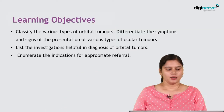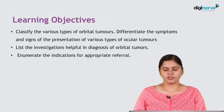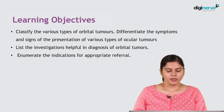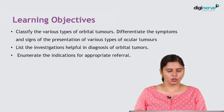Welcome students to this session. This is the continuation of ORBIT 1 lecture to ORBIT 2. Our goal of learning in this will be to classify various types of orbital tumors, to differentiate their symptoms and signs at presentation, and to list the investigations which are helpful for diagnosis of orbital tumors and the indications for appropriate referral.